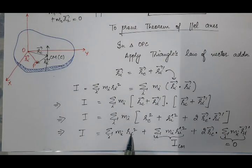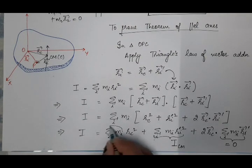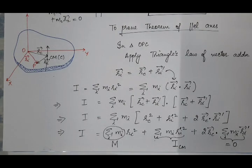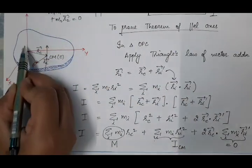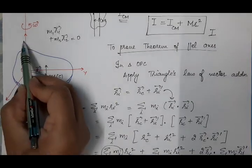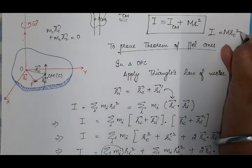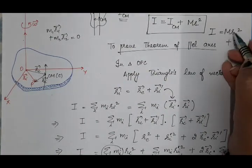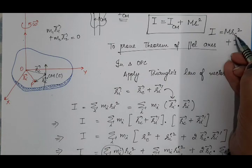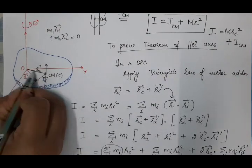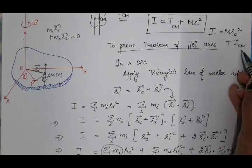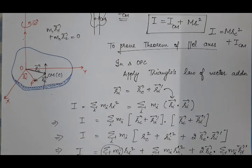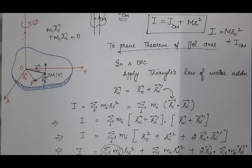Therefore I = M rc² + ICM, where Σi mi = M is the total mass of the plane lamina and rc is the perpendicular distance between the two parallel axes. This proves the theorem of parallel axes: I = ICM + M rc². So from the rotational motion of the plane lamina as a rigid body we have derived the parallel axis theorem. This concludes the rotational motion of the plane lamina.